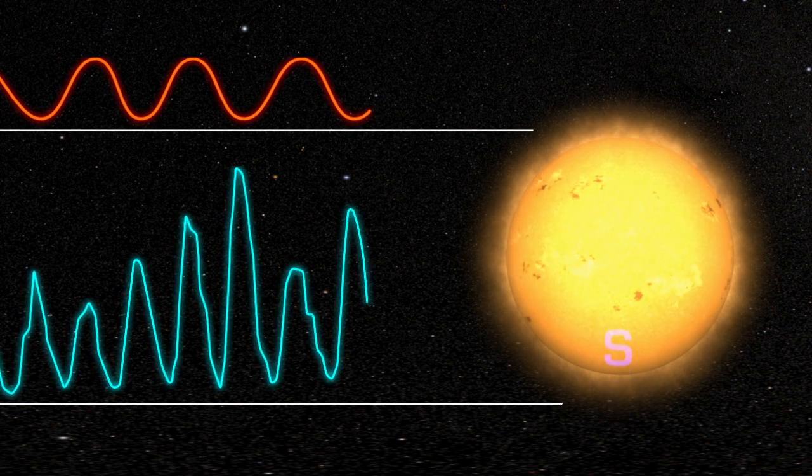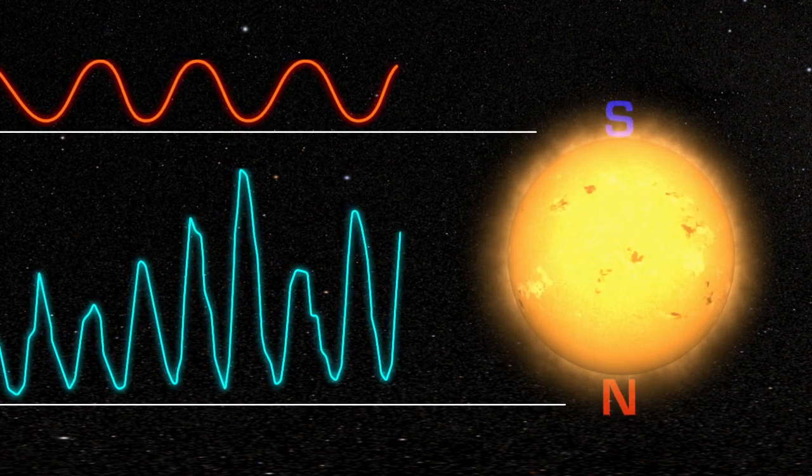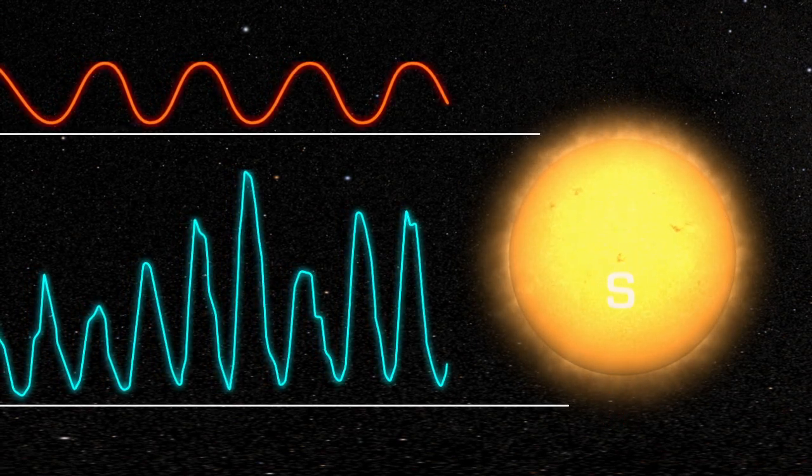The two cycles are different, but the 11-year sunspot cycle is often referred to as the solar cycle, which can be a little confusing.